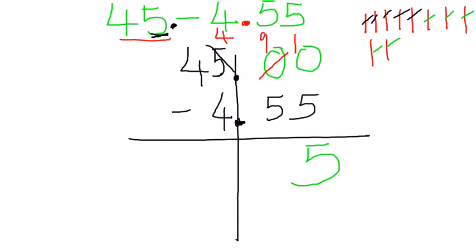9 minus 5? 1, 2, 3, 4, 5, 6, 7, 8, 9. Minus 5? 1, 2, 3, 4, 5. We will have how many left? 1, 2, 3, 4. Excellent. 4.